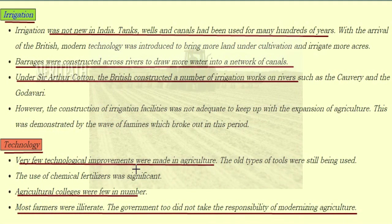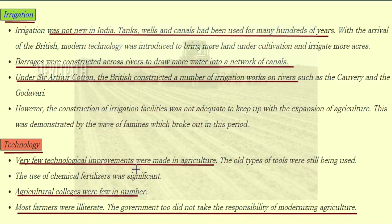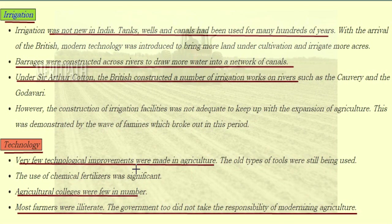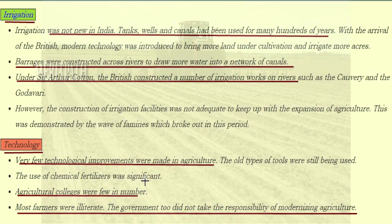Very few technological improvements were made in agriculture. The old types of tools were still being used. The use of chemical fertilizers was also limited. Agricultural colleges were very few in number, most farmers were illiterate, and the government did not take any responsibility for modernizing agriculture.